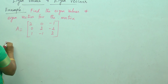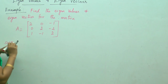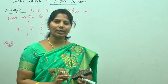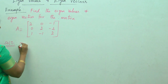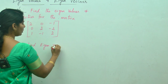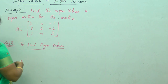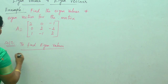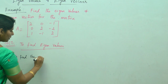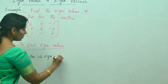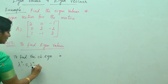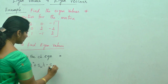Solution — we need to go step by step. To find the eigenvalues, first we need to find the characteristic equation. The formula to find the characteristic equation is: lambda cubed minus S1 lambda squared minus S2 lambda minus S3 equals 0.